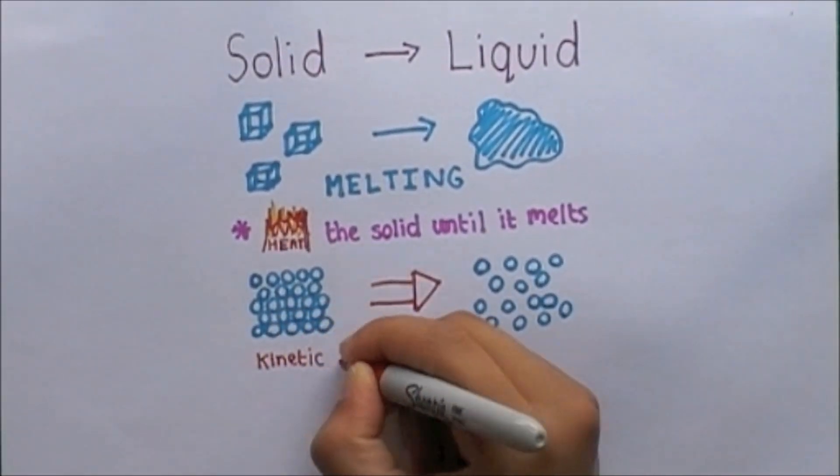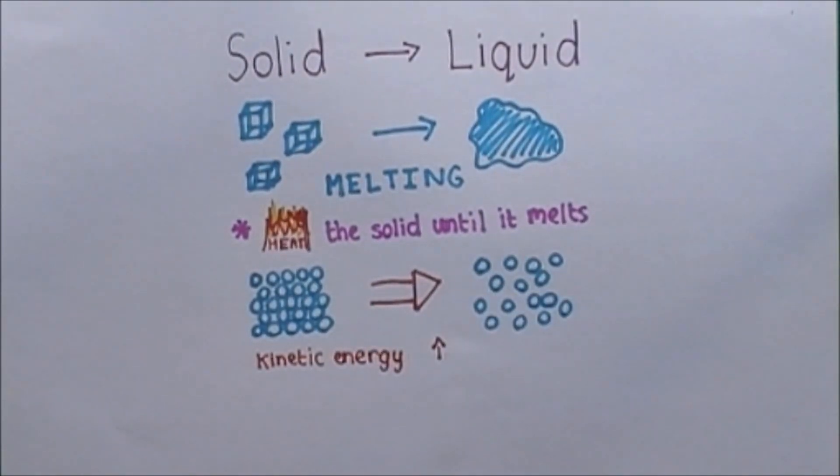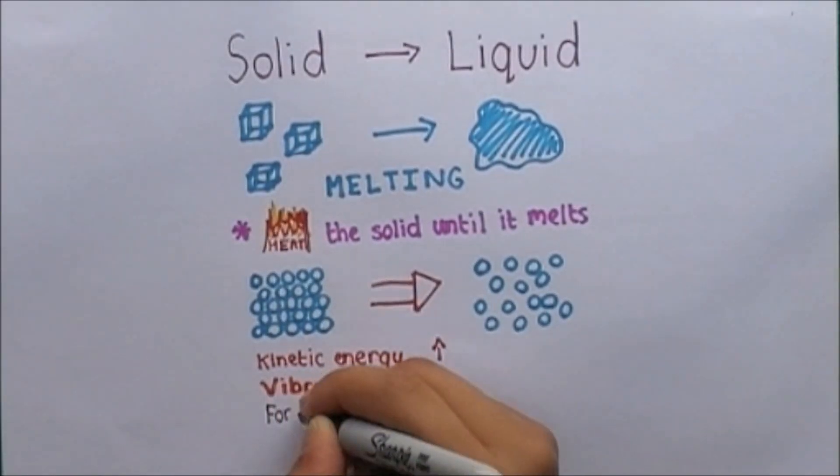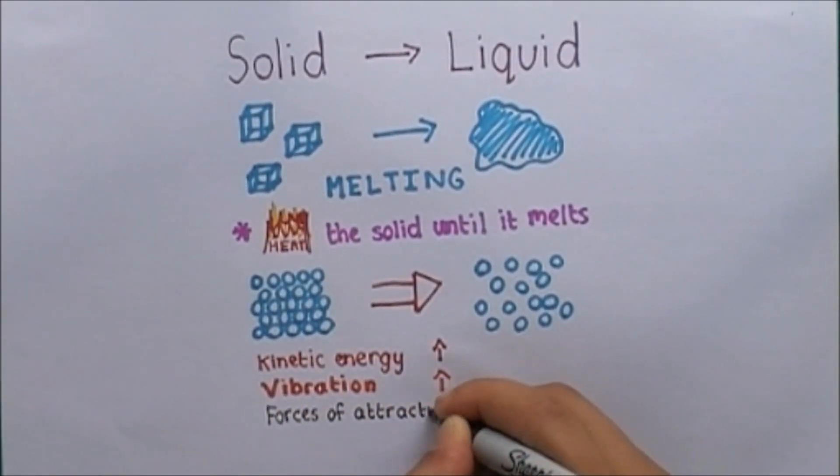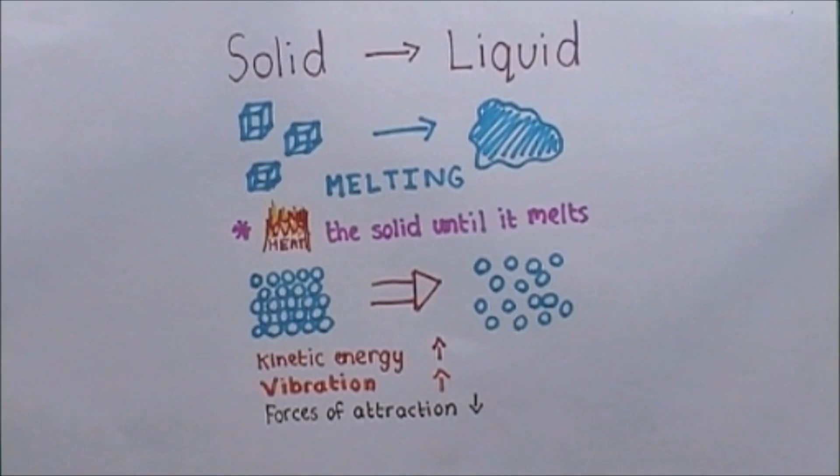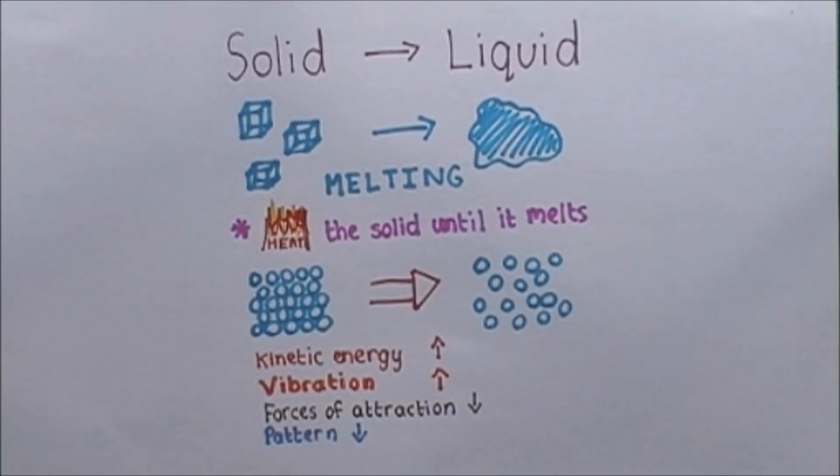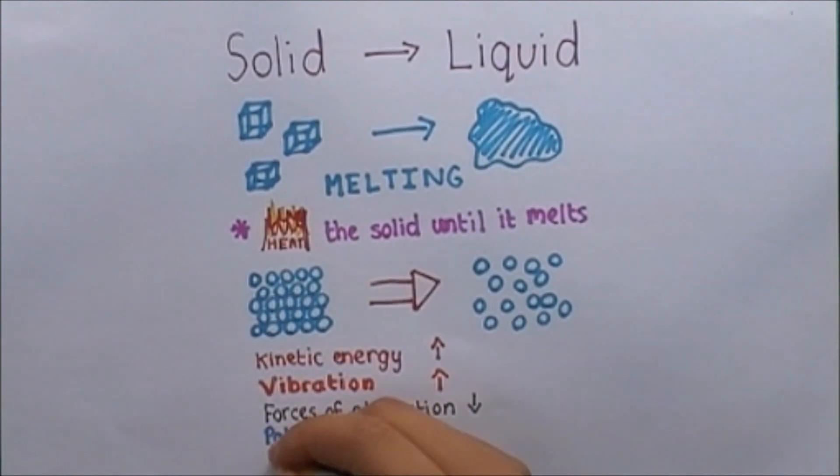When a solid changes into a liquid, the kinetic energy, movement energy, of the particles increase, which in turn makes the particles vibrate more. The forces of attraction weaken and the particles lose their fixed regular pattern. This allows them to slide past each other, hence becoming a liquid.